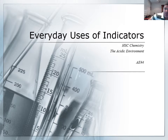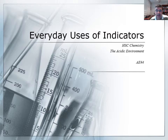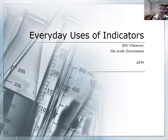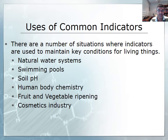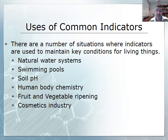Hello students and welcome to video number four in the acidic environment series. In this one we're going to be looking at some of the applications of the use of indicators. We've already talked about some of the common indicators - things like universal indicator, litmus, phenolphthalein, bromothymol blue and methyl orange.